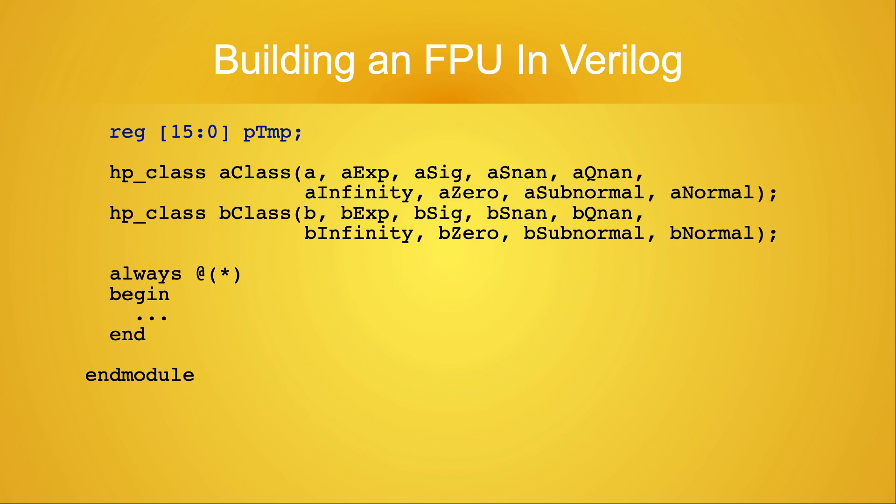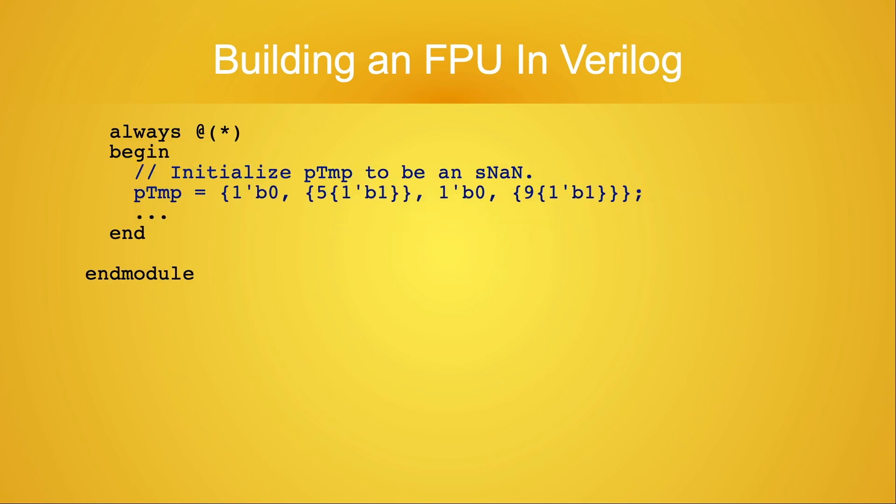Before adding code to the inside of the always block, there's one more thing I need: a temporary value to hold the product. I'm calling this ptemp. Inside the always block, I'm going to start by initializing ptemp to a unique signaling NaN value. This will be useful to help us ensure that we've covered all the possible cases for the various pairs of input values.